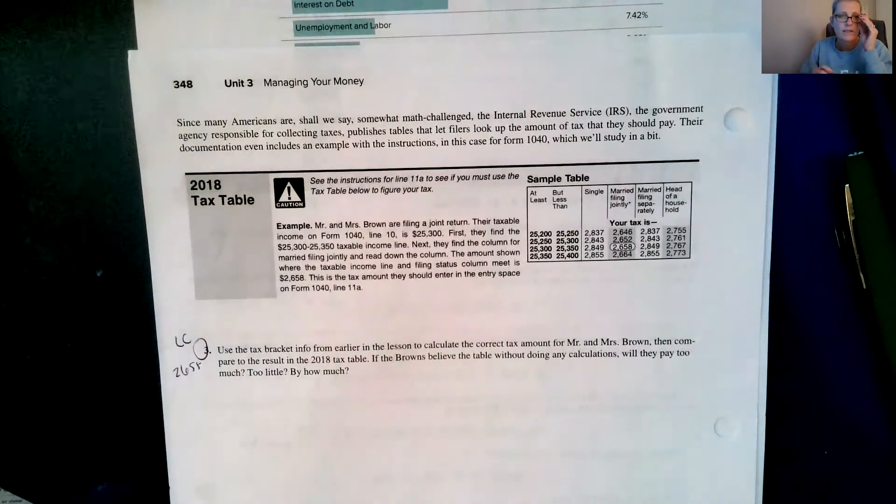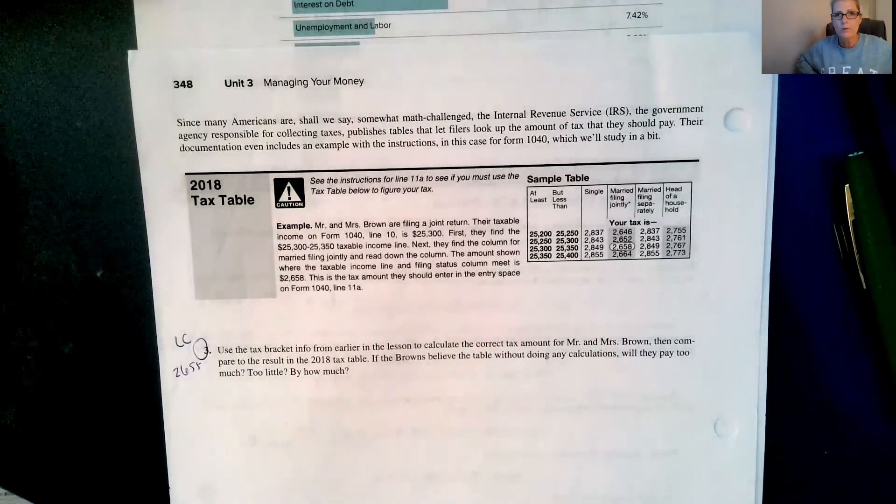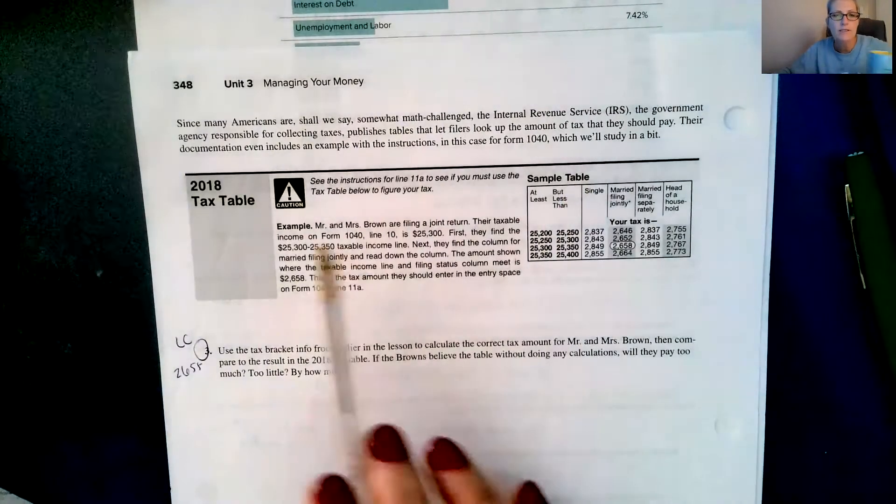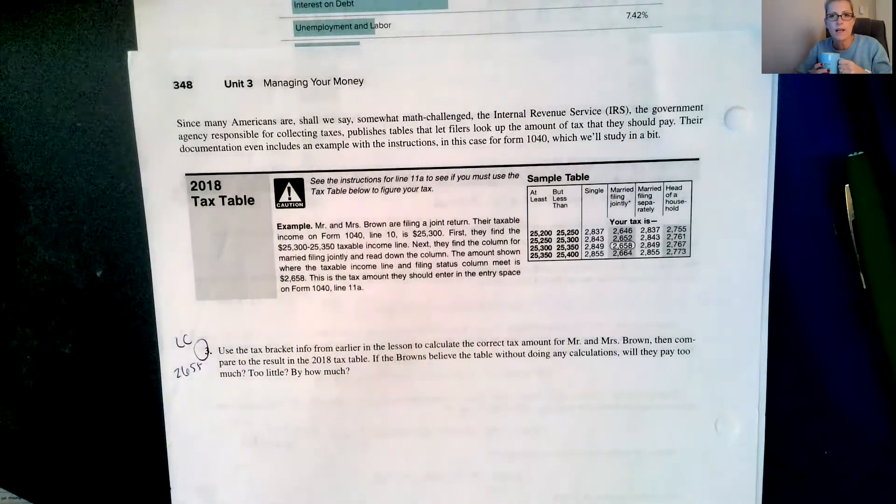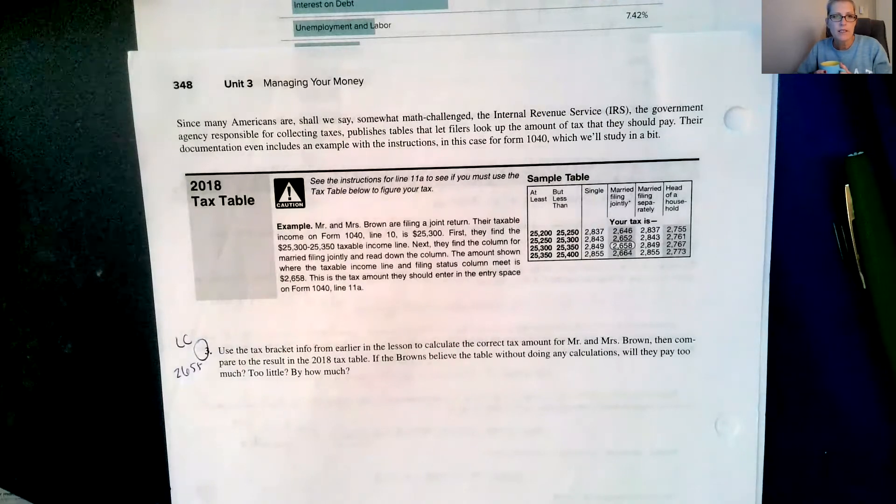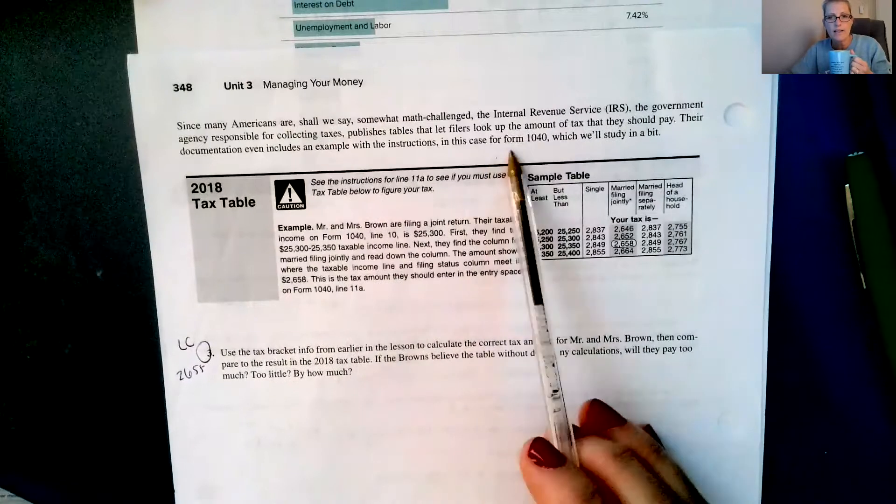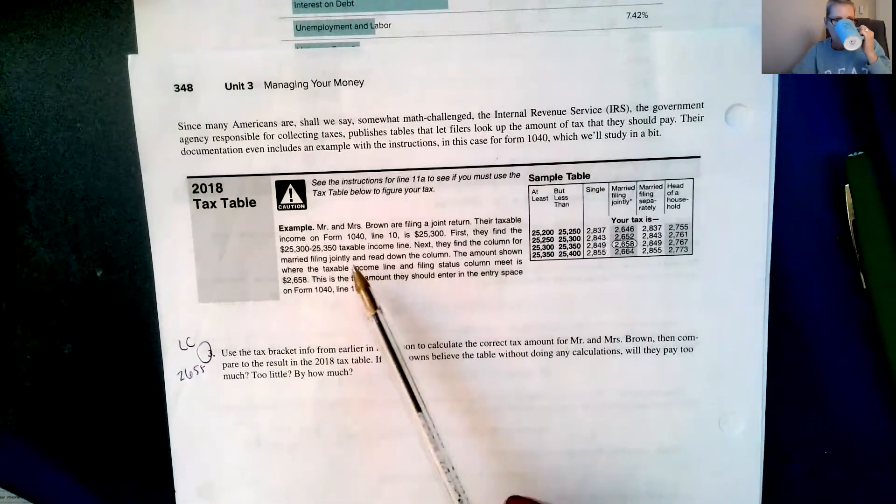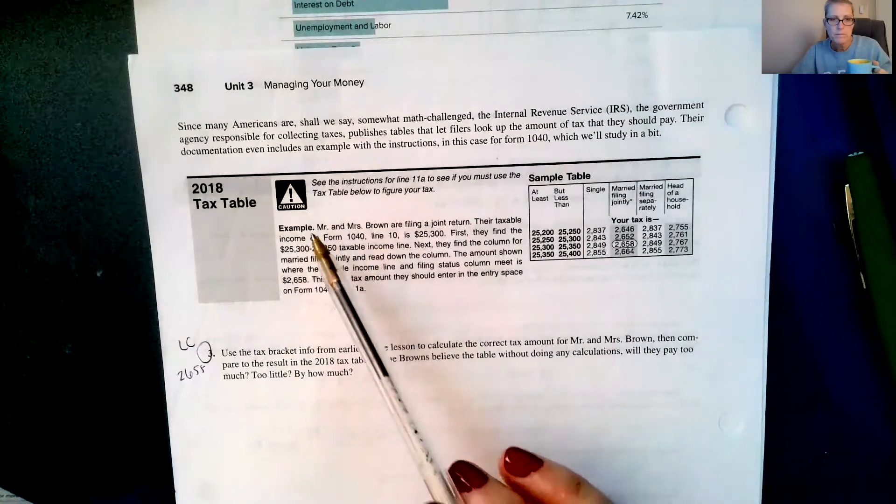So page 348 says since many Americans are, shall we say, somewhat math challenged, the Internal Revenue Service, the IRS, the government agency responsible for collecting taxes, publishes tables that let filers look at the amount of tax they should pay. Their documentation even includes an example with the instructions, in this case for the form 1040, which we'll study in a bit.